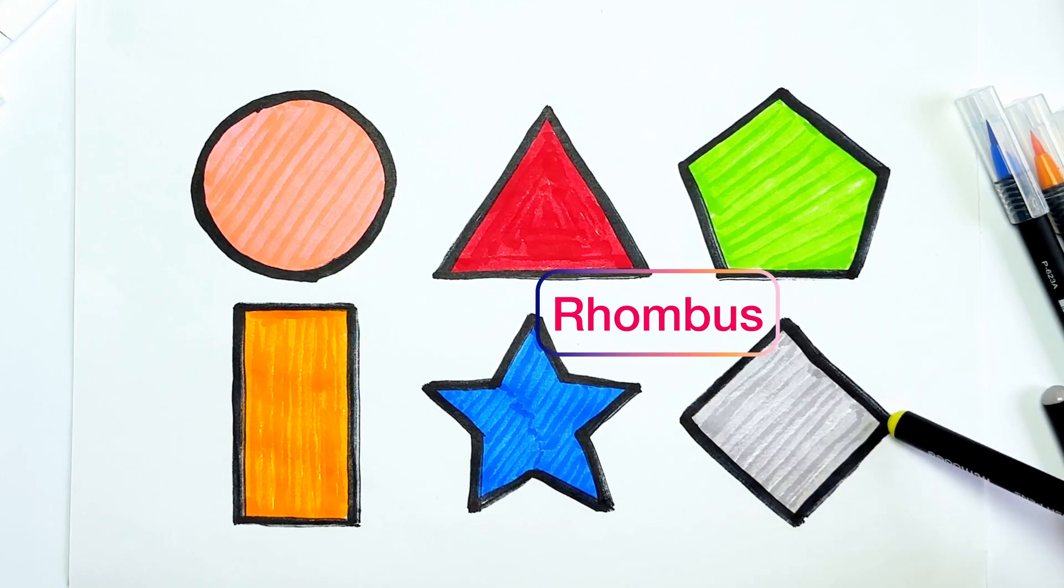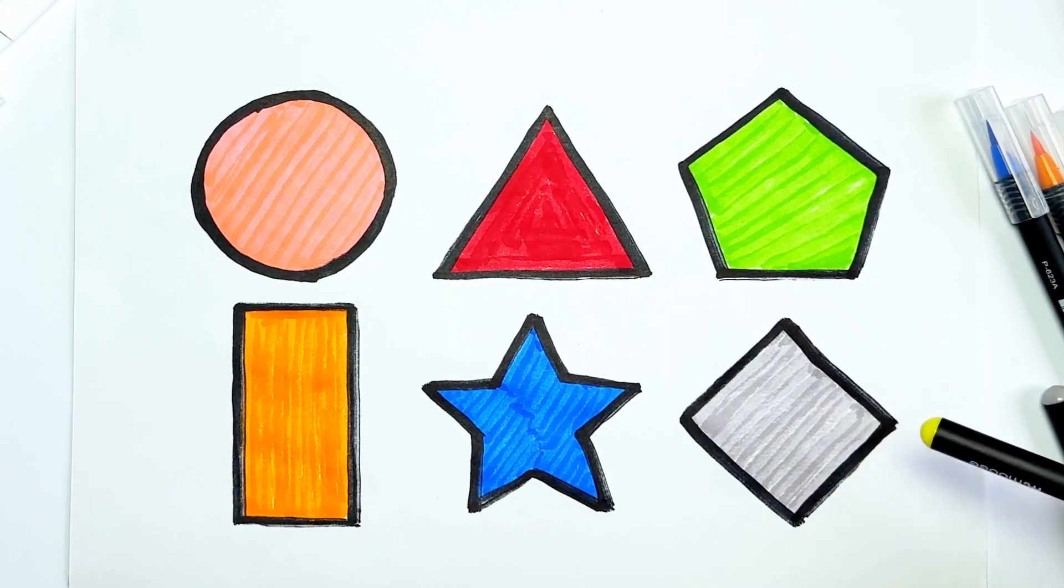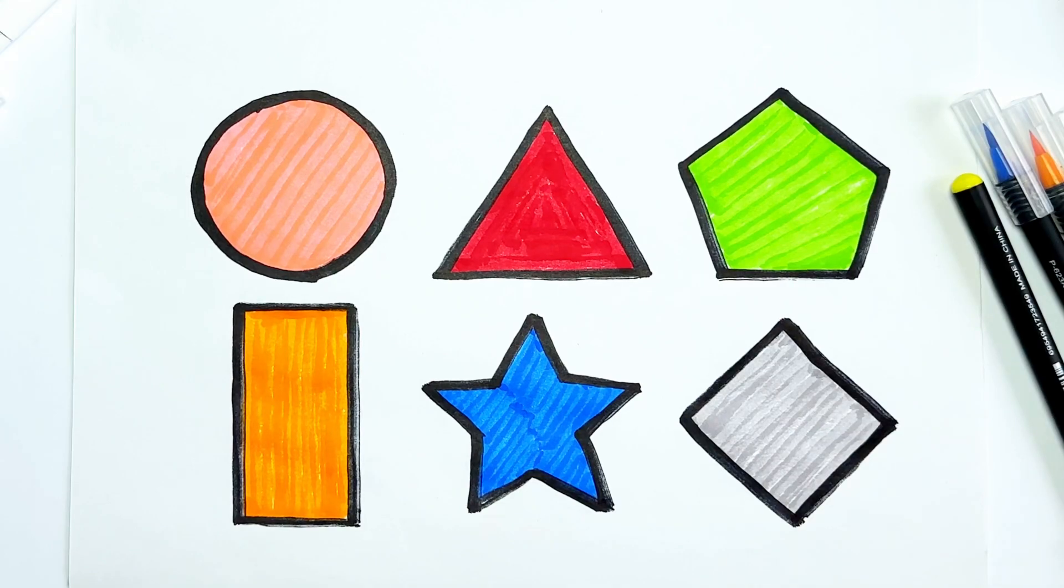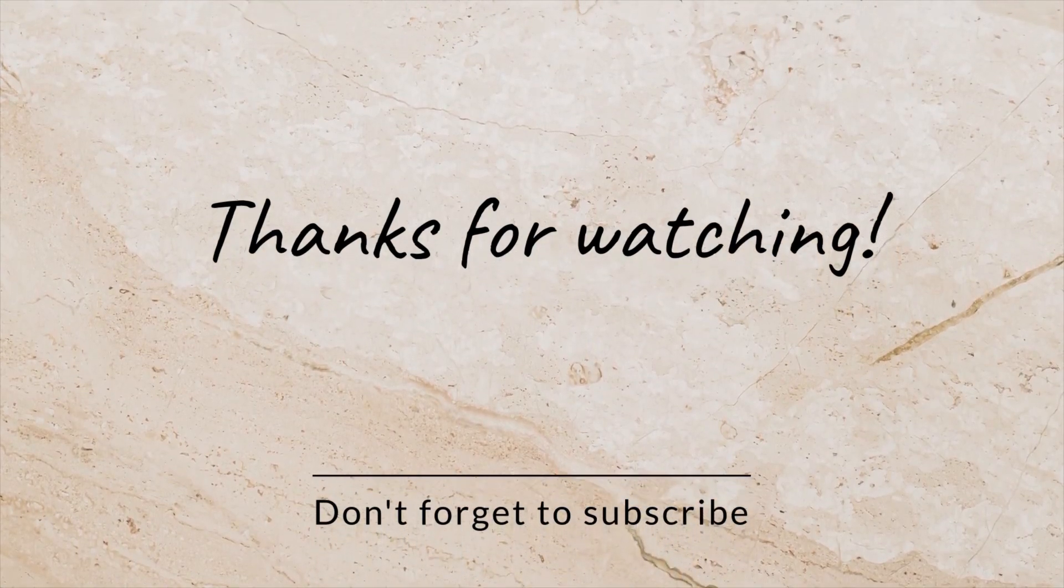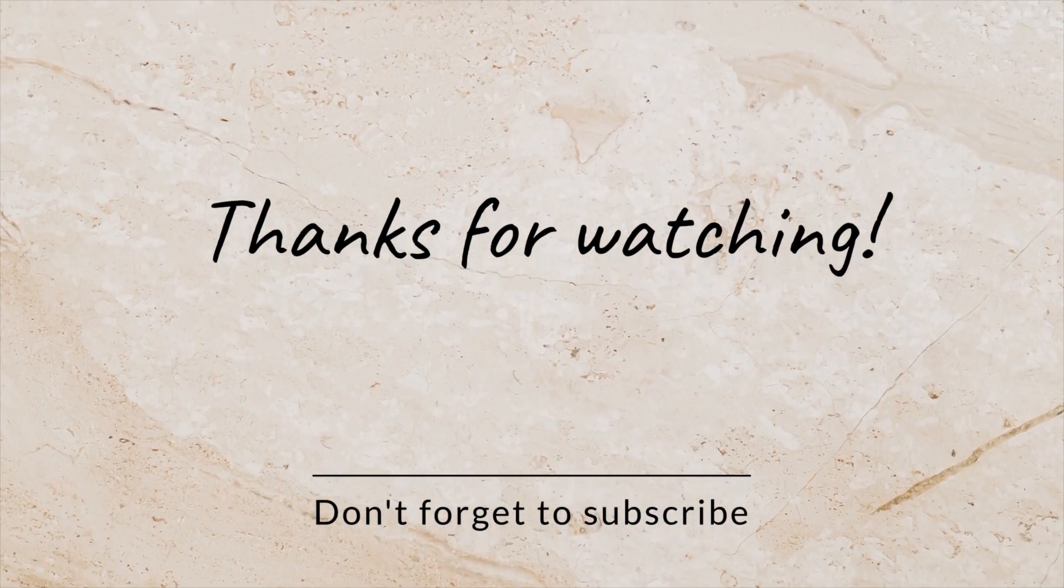And rhombus. Rhombus is like a square but standing on one angle. One, two, three, four angles. Rhombus. Thank you. Bye-bye. Bye.